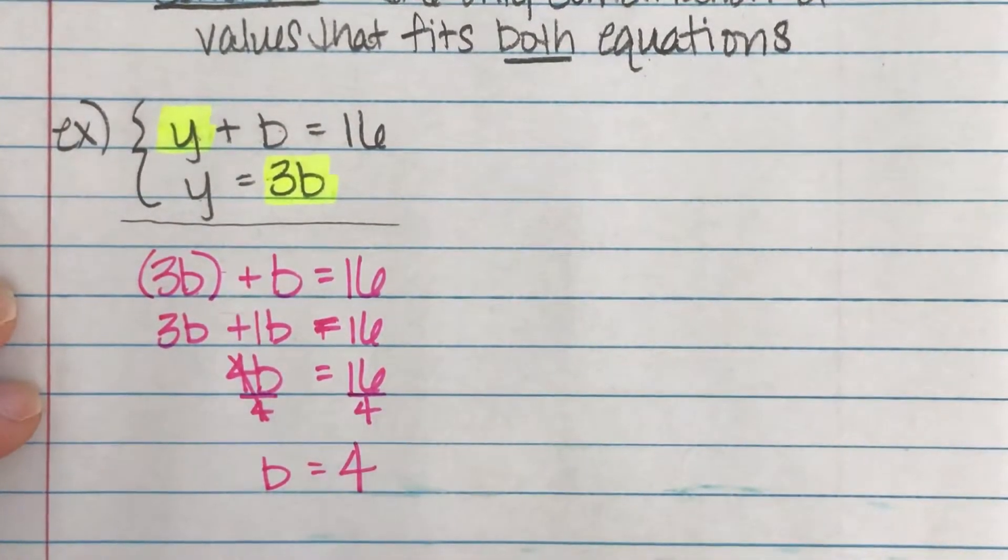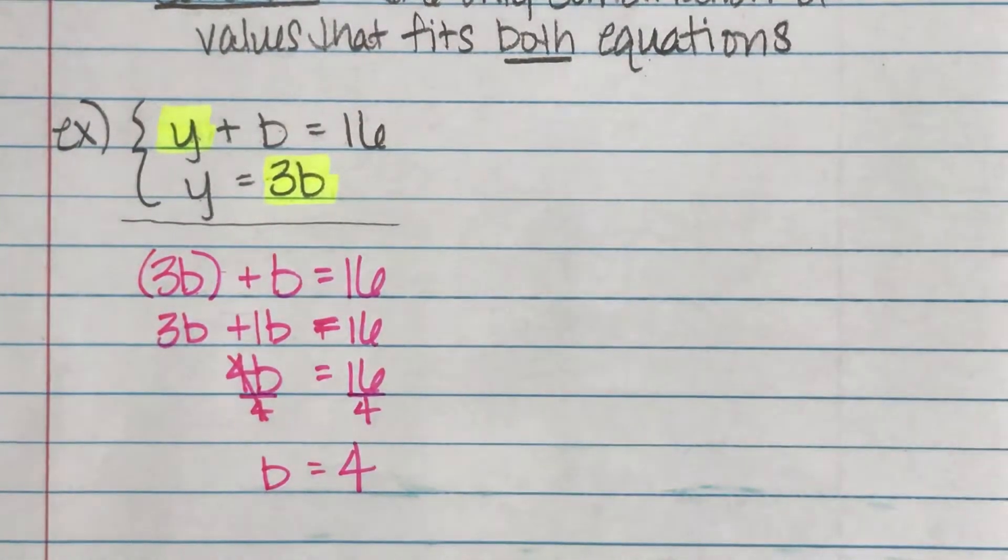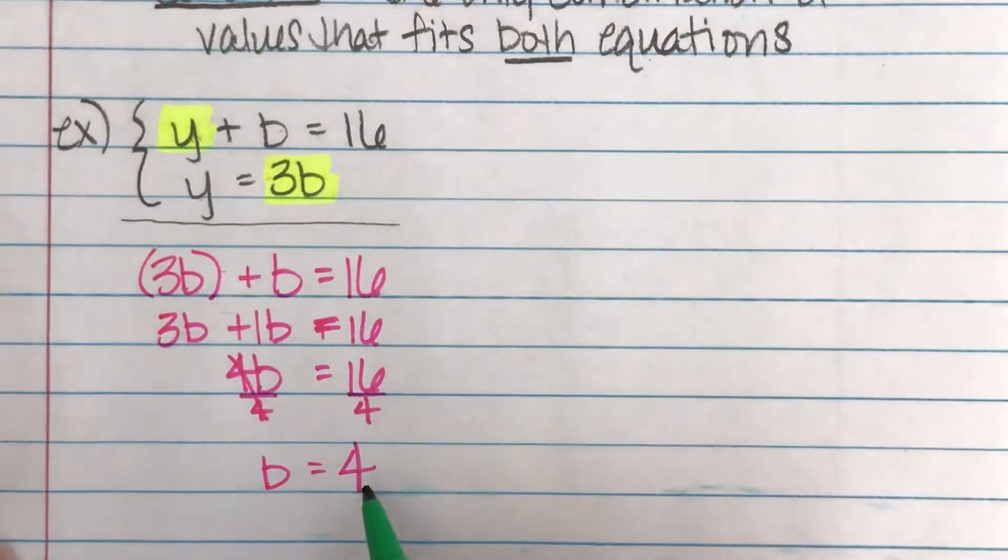And I end up with b by itself has to equal 16 divided by four is four. Awesome. Now I know how many blue candies there has to be. There has to be four blue candies.